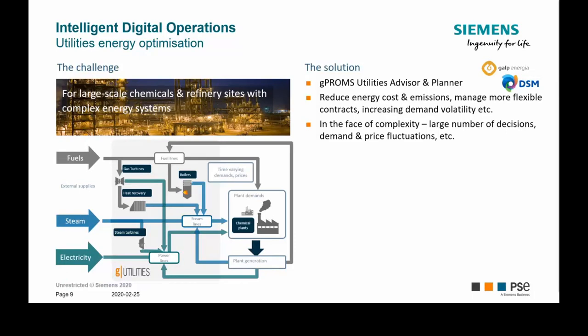Before presenting the solution, let me mention some typical challenges for online optimization. One challenge is knowing how much electricity is being generated on-site — by boilers, gas turbines, and so on — and how much needs to be bought from the energy supplier. Of course you need to know the electricity price, which changes by the hour, to have a good prediction of your economics. Another challenge is steam distribution efficiency and how to deal with steam venting and reduce it.